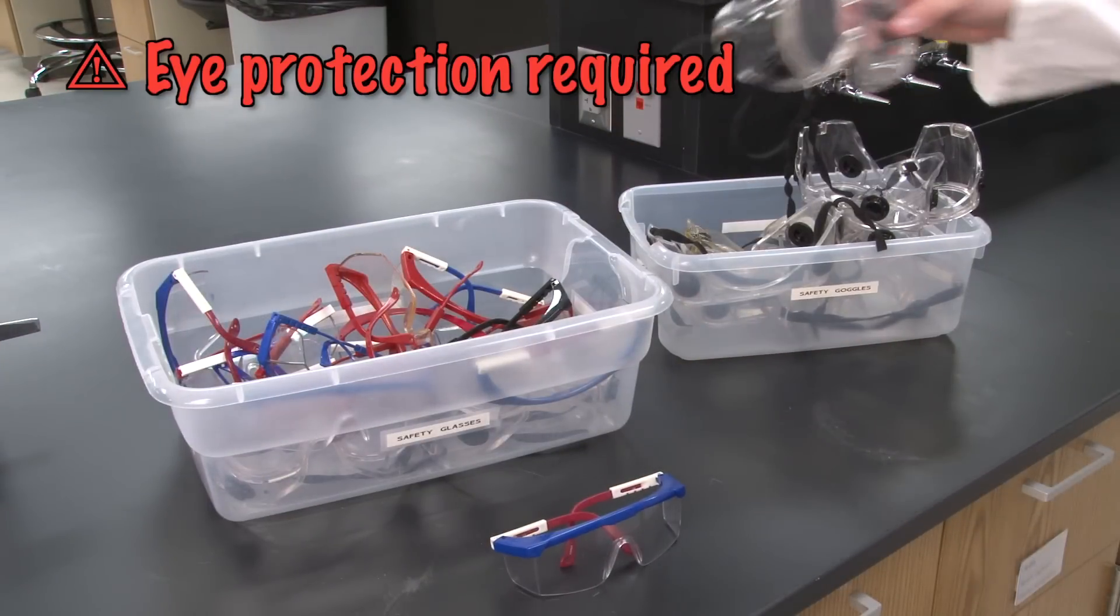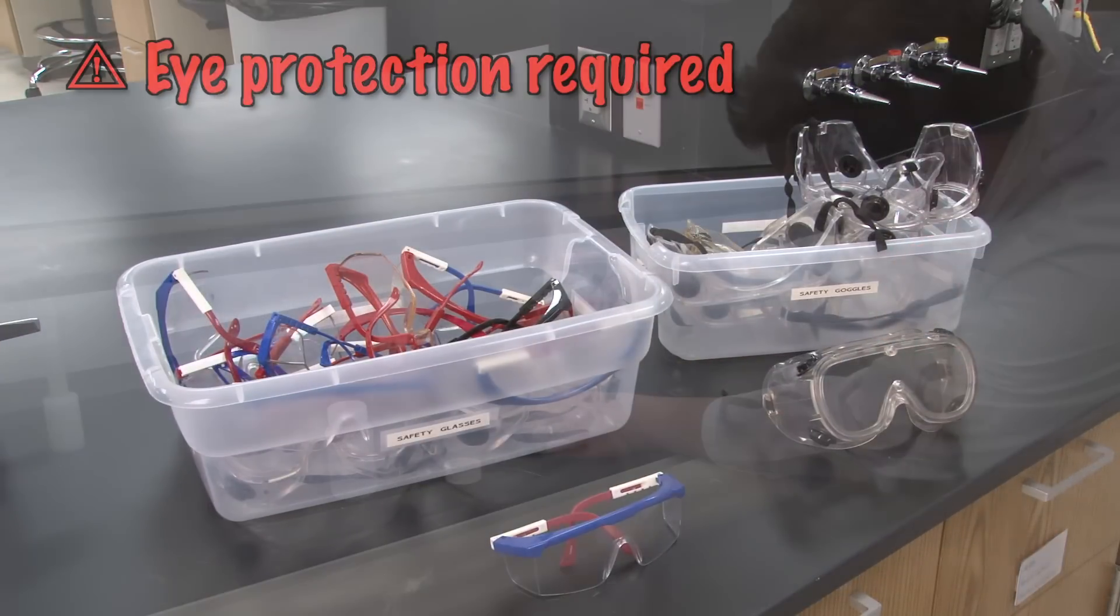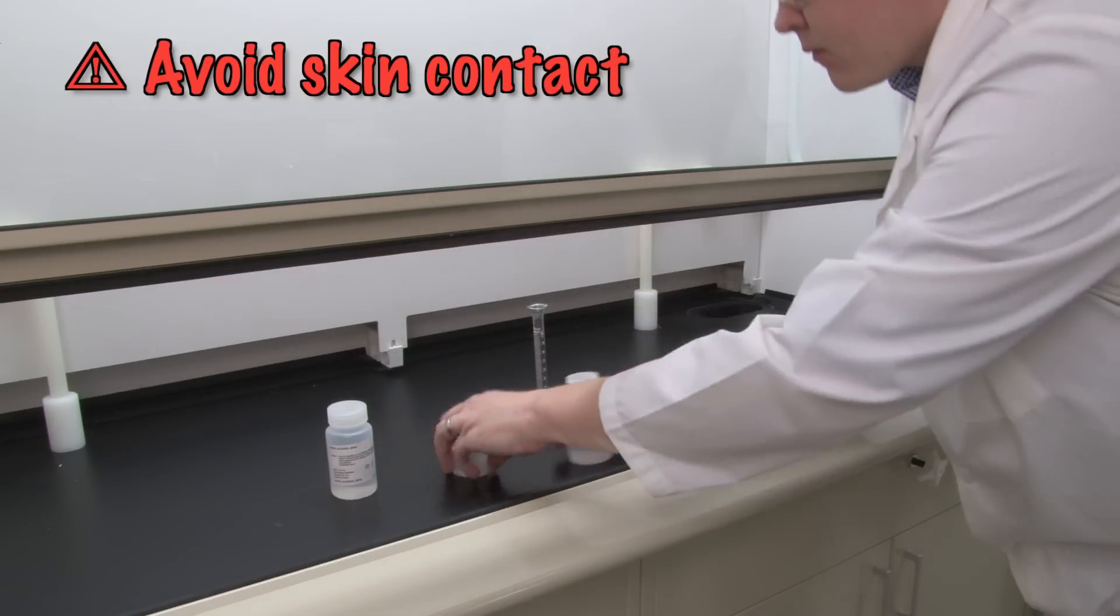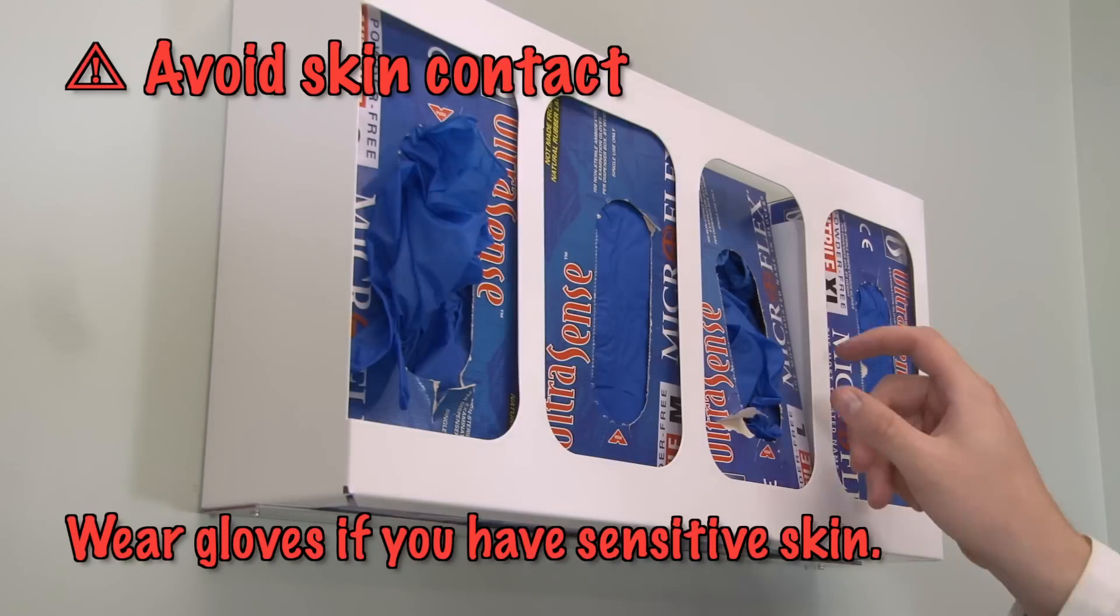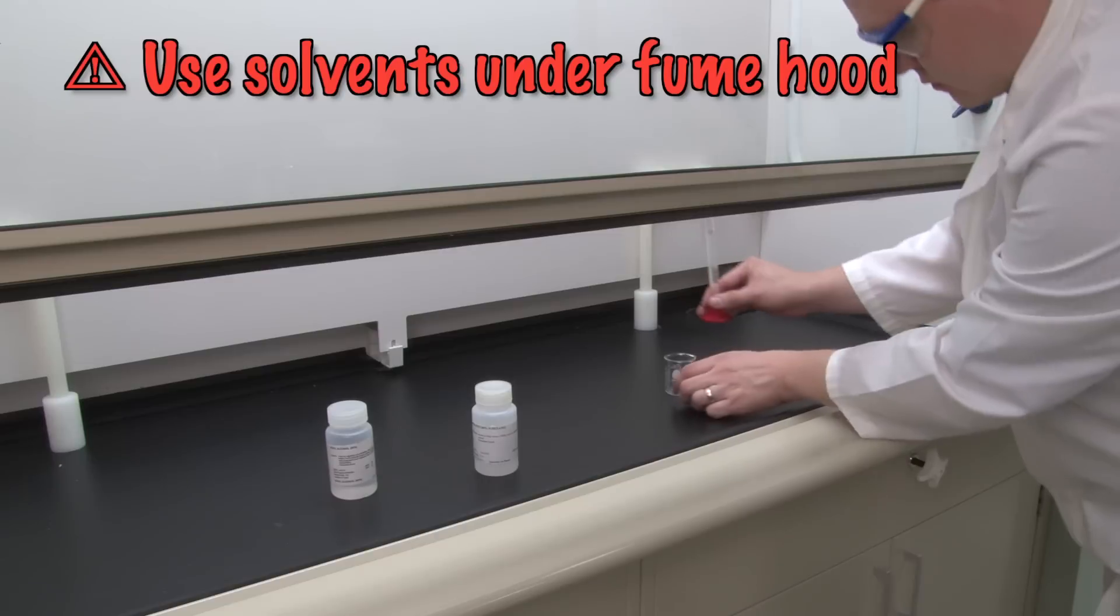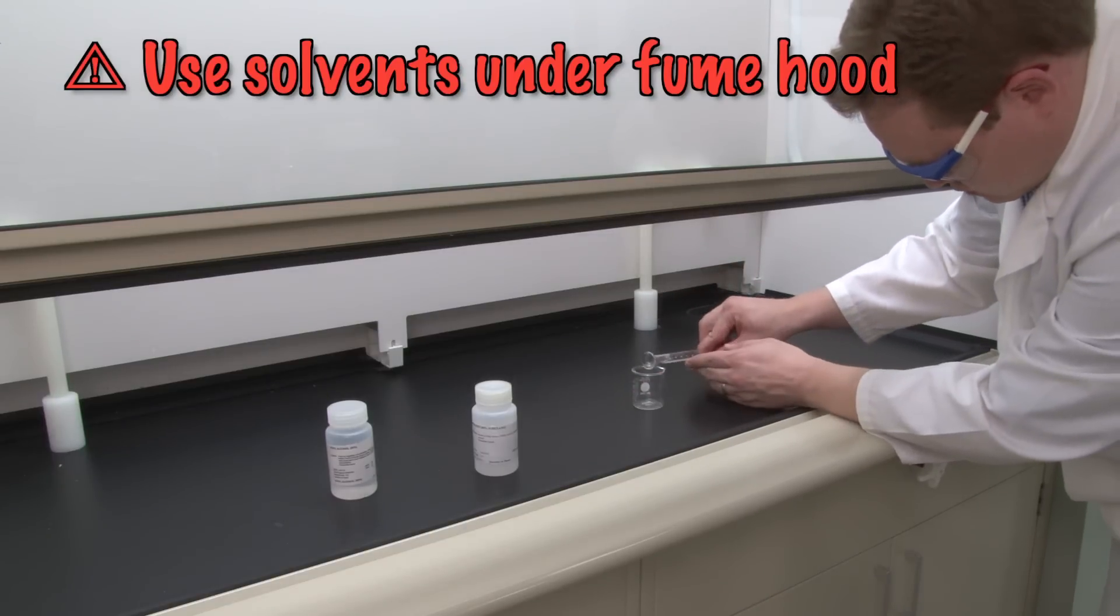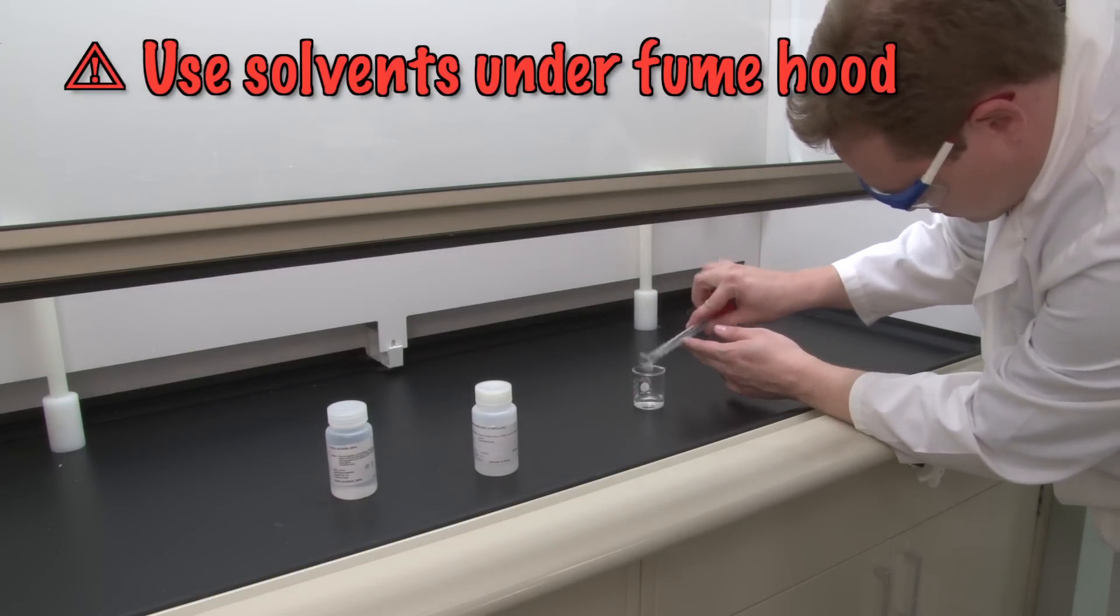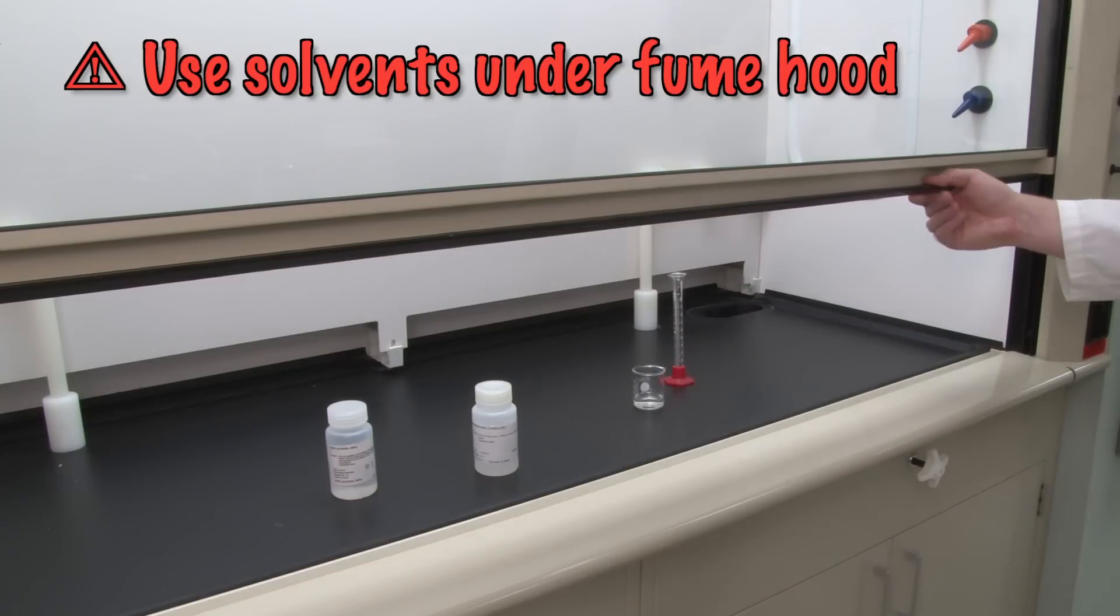Safety glasses or goggles must be worn for the entire experiment. The solvents we will use may dry or irritate your skin, so be careful when you're pouring them. You may want to wear gloves if you have sensitive skin. We also need to make sure that no solvent vapors get into our breathing air, so the solvents will only be used under the fume hoods. Make sure the hood sash is pushed back down whenever possible.